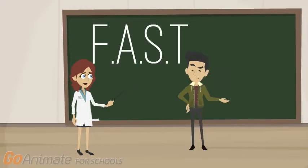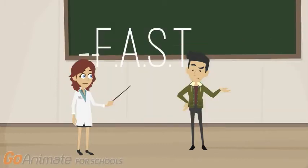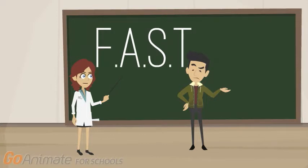To find out if someone is having a stroke, use the letters in the word FAST. F for face. Ask the person to smile. Does one side of the face drop? A for arms. Ask the person to raise both arms. Does one arm drift downward? S for speech. Ask the person to repeat a simple sentence. Is the speech strange? T for time. If you see any of these signs, call 911 immediately.